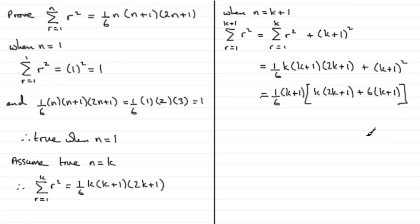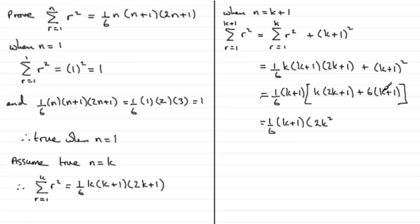Now we just need to clean up the square bracket. Multiplying out, we get 2k squared, then k times 1 is k plus this 6k, giving 7k, and then 6 times 1 on the end gives plus 6. So the bracket becomes 2k squared plus 7k plus 6.